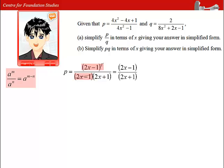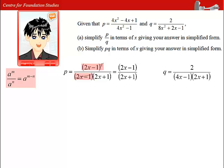Now, we can factorize the denominator expression of q, giving us 2 over the product of 4x minus 1 and 2x plus 1.